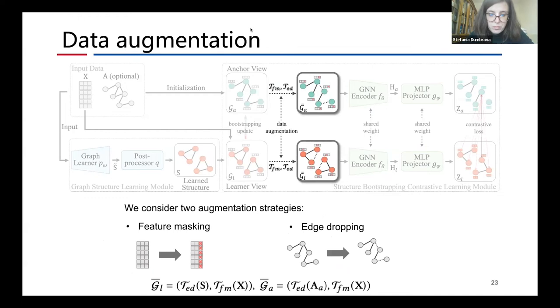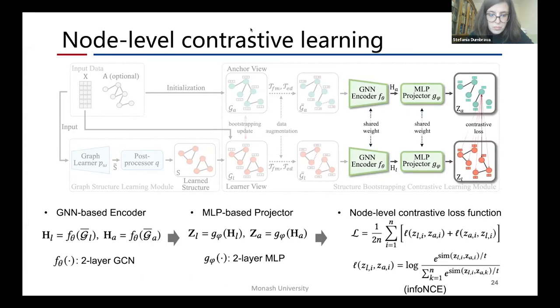After view establishment, we use two augmentation strategies to perturb the proper views. Specifically, the feature masking strategy is to randomly mask some feature dimensions of the feature matrix, and the edge-dropping is to randomly discard some edges from the graph structure. Then, a contrastive learning component is used to maximize the mutual information between two views. A GNN-based encoder first generates a node representation for each node in both views. Then, an MLP-based projector is employed to map the node representation into a new representation space for contrasting. Finally, a node level InfoNCE contrastive loss is used to maximize the node-level agreement between two views.